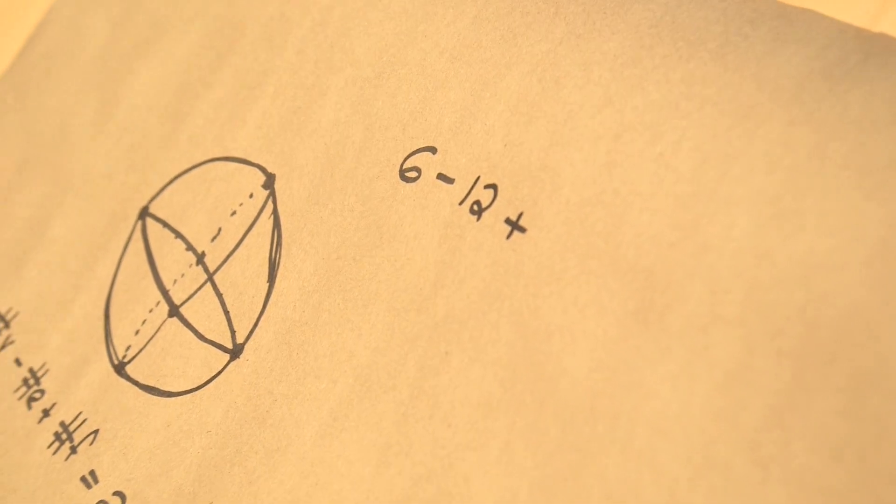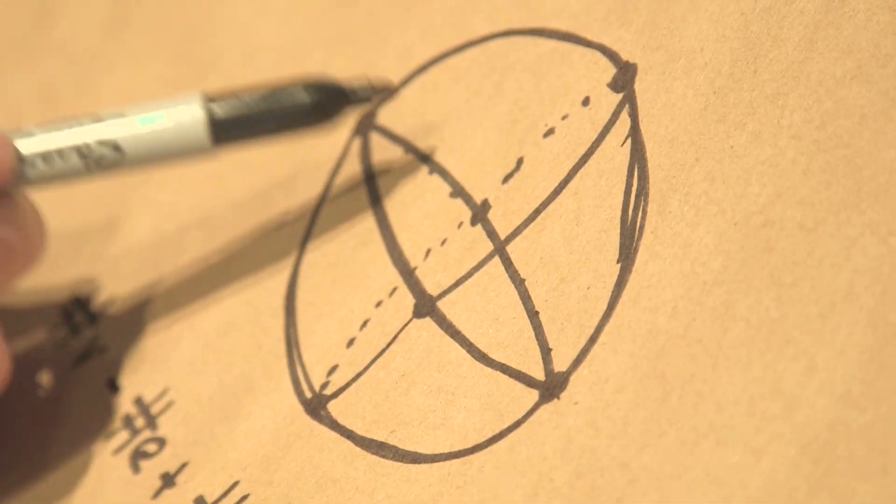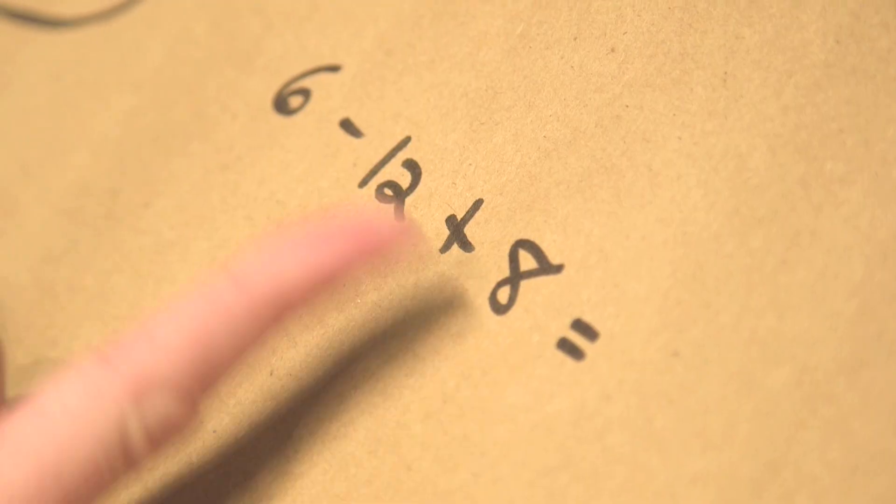And how many faces do we have? Well on the top, see, we have one, two, and then there are two more in the back. So one, two, three, four on the top and similarly one, two, three, four on the bottom. So we have eight faces total. And what do we have? We have fourteen minus twelve is two, like we should get. So we can do the vertices, edges, and faces in lots of different ways. We still get that the Euler characteristic of the sphere is two.